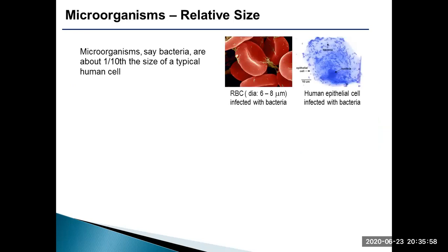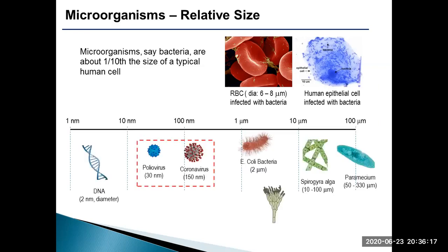Let us have a close look at the size variations among different microorganisms. On a comparative scale, bacterial cells are, for example, one-tenth to one-fifth in size of that of a human red blood cell. Here, the relative size of microorganisms is presented on a large scale. Only for comparison purposes, the size of DNA and viruses is included, though they don't belong to microorganisms.